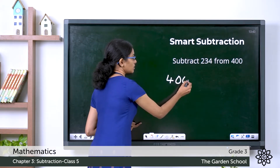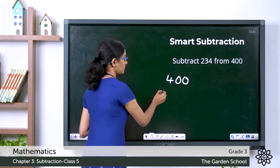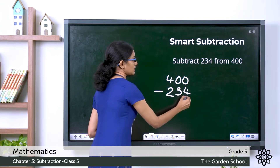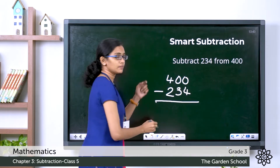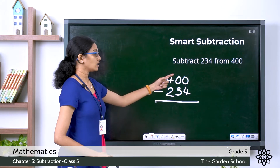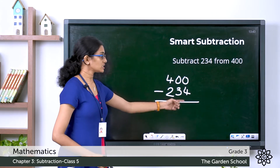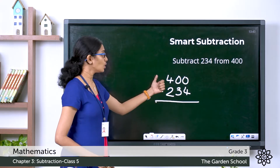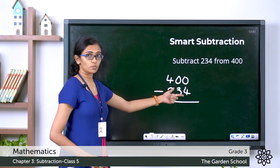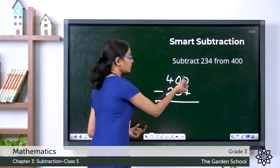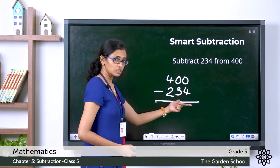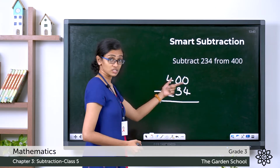We write the minuend 400, put the minus symbol, and write the subtrahend below it in proper columns. Then to subtract, we cannot do 0 minus 4. So what do we do? We regroup from the next place. In the next place it is also 0, so we go to the next place and regroup.